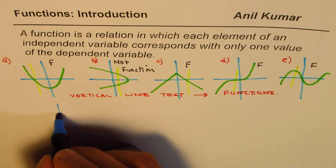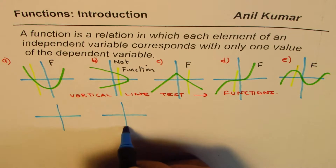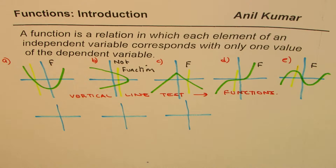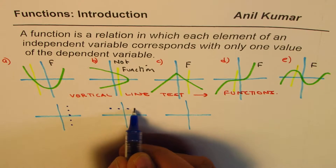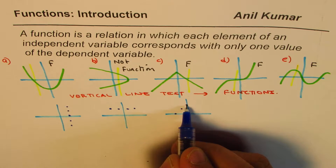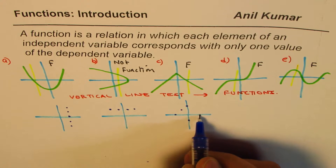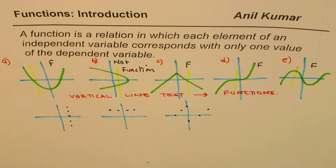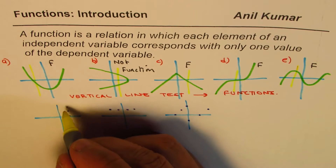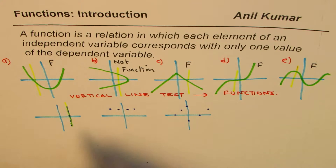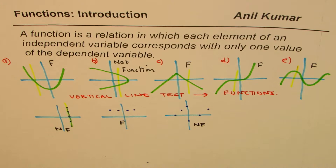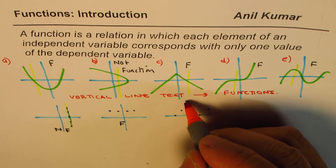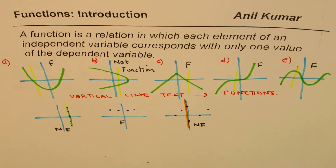Let me sketch some more — this one is kind of like this. I'll try to trick you here. We have something like this, and if I have a set of points — all these set of points, then this set of points, and then a point like this. Now, tell me which ones are functions and which ones are not. Here, if I draw a vertical line, it fails, so this is not a function. And here, we are saying not a function — can you tell me why? Well, the vertical line which is the line itself has two points on it, so this is not a function.